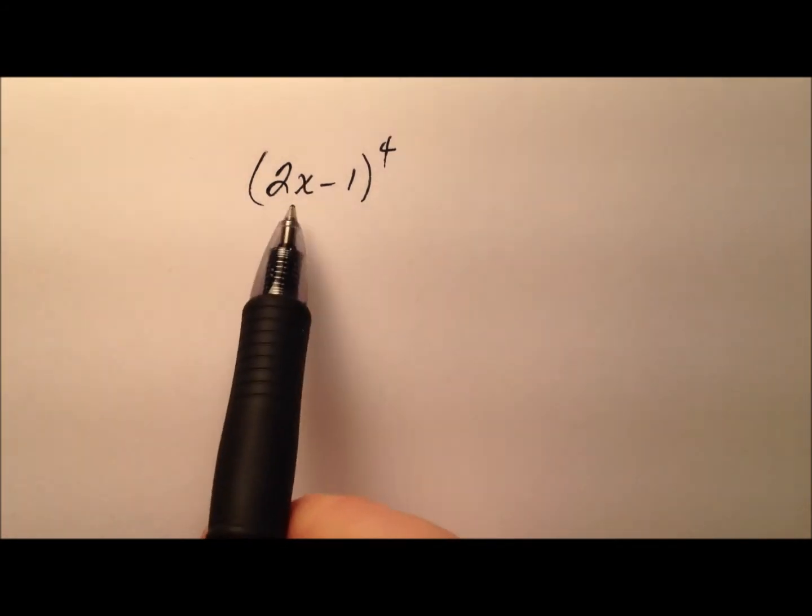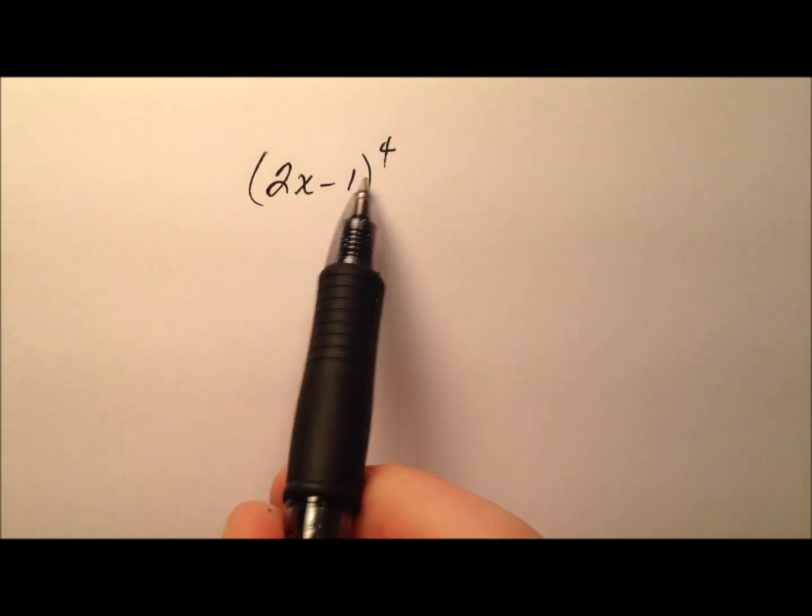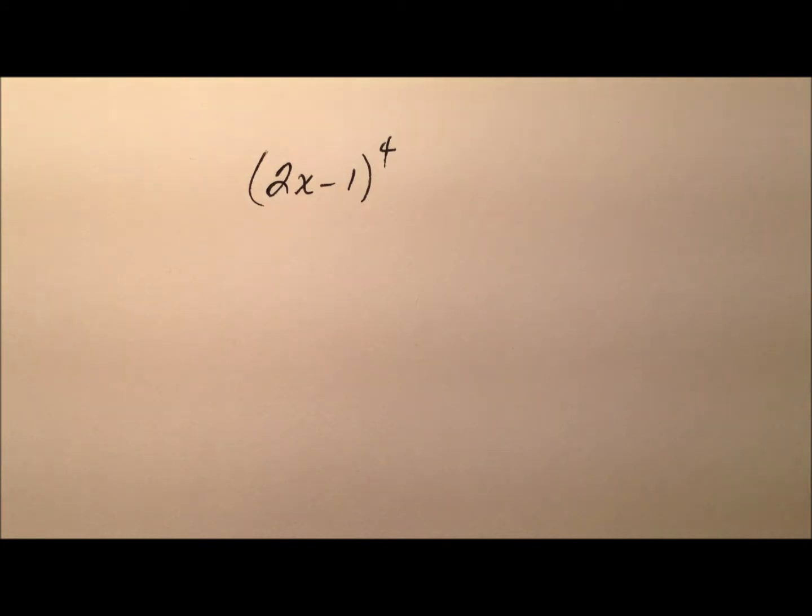In this example, we're going to look at taking this binomial 2x minus 1 and raising it to the power of 4.